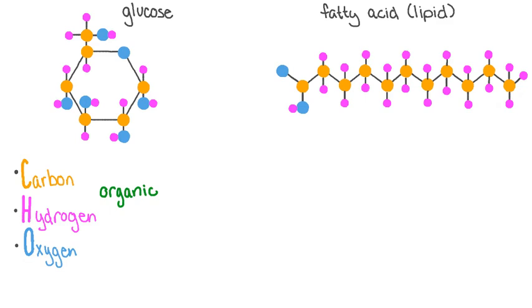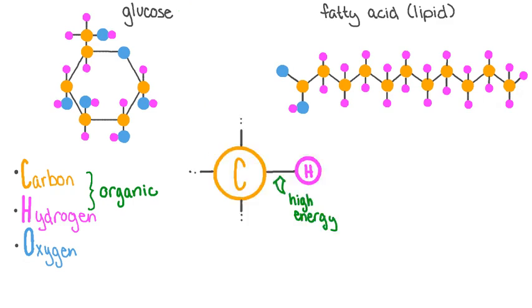When we say that a biological molecule is organic, we mean that it possesses carbon-hydrogen bonds. So a molecule like glucose is what we consider organic, but a molecule like water is not. The bond between carbon and hydrogen is an especially high energy bond, meaning that the reactions that break them are usually exothermic and that excess energy can be transferred to other cellular processes.